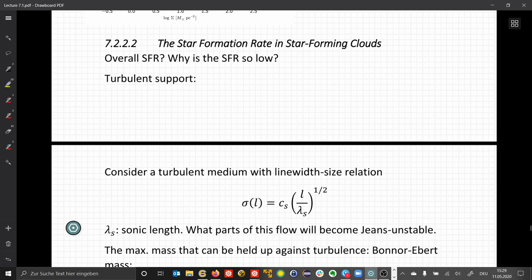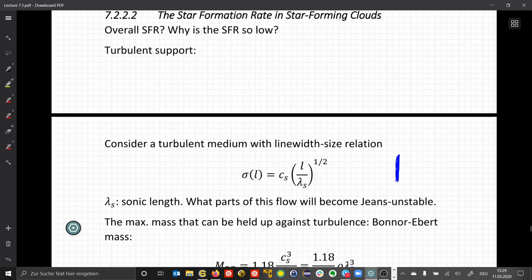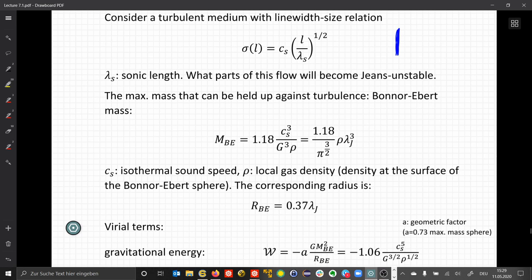One possibility to reduce the star formation efficiency is possible turbulent support. When we look at turbulent medium, we saw the Larson relation. Larger clouds have a higher population of faster moving particles, and this defines a sonic length that corresponds to what parts of this flow will be able to become Jeans unstable. And the maximum mass that can be held up against turbulence is the Bonner-Ebert mass, which is a function of this Jeans length and the density.